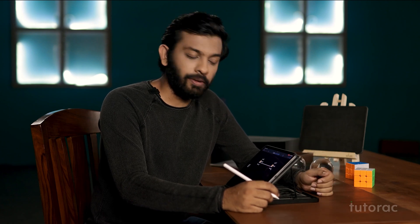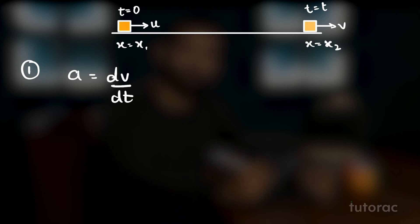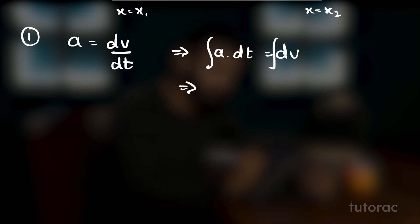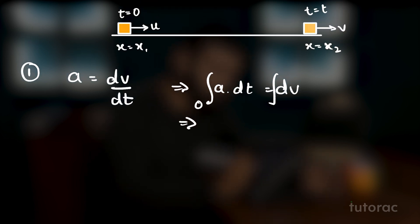The first equation of motion can simply be derived using the definition of acceleration. Acceleration is defined as the rate of change of velocity and hence we can write it as dv by dt, which is the acceleration at any given instant. If we take the dt term to the other side, we get a·dt equals dv. It is given that at time t equals 0 the velocity is u, and after any time t the velocity is v.